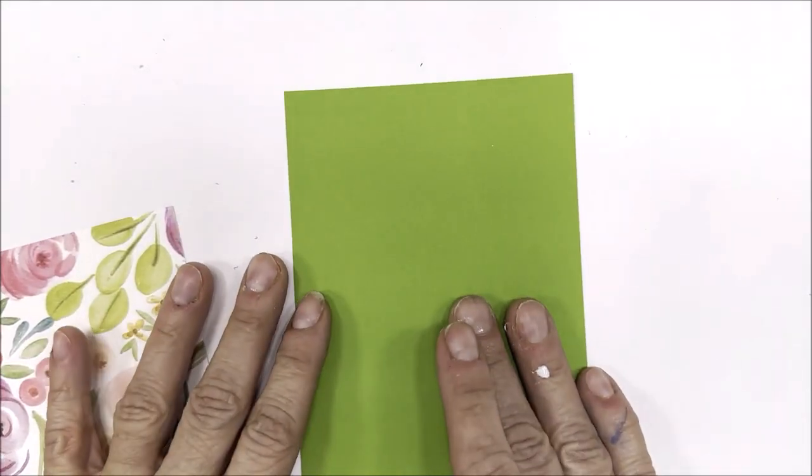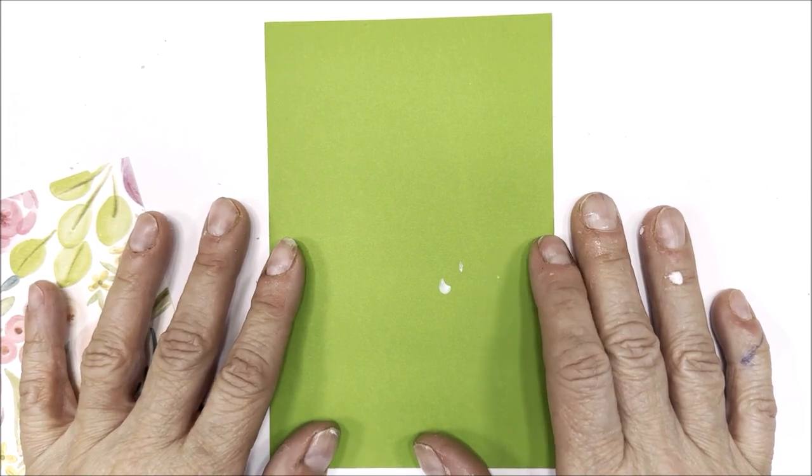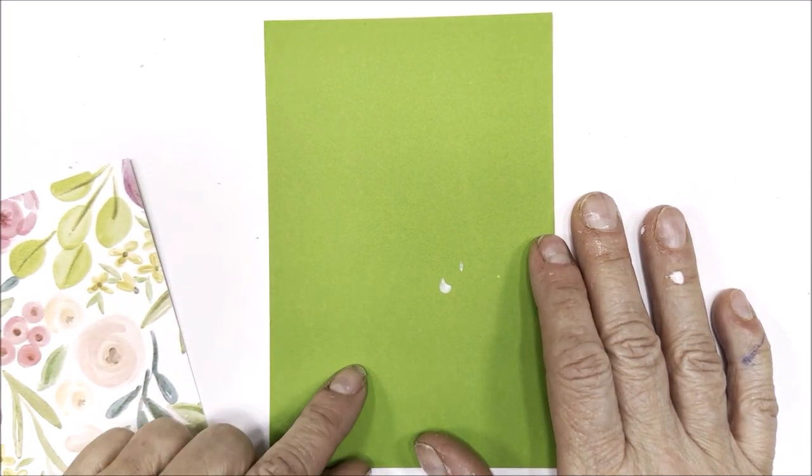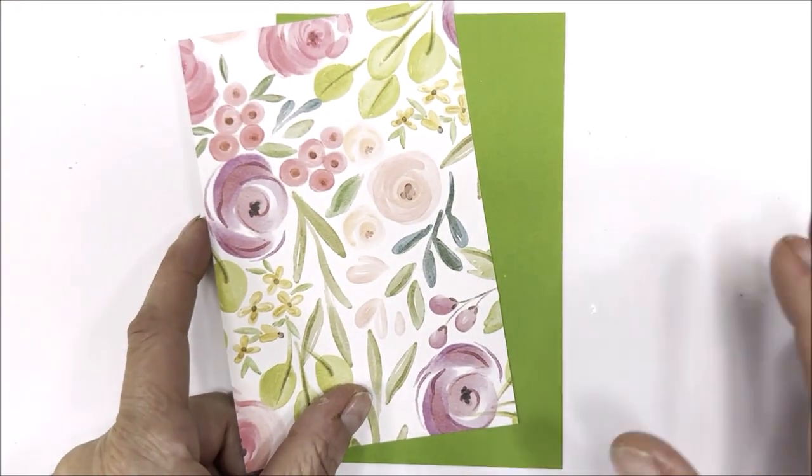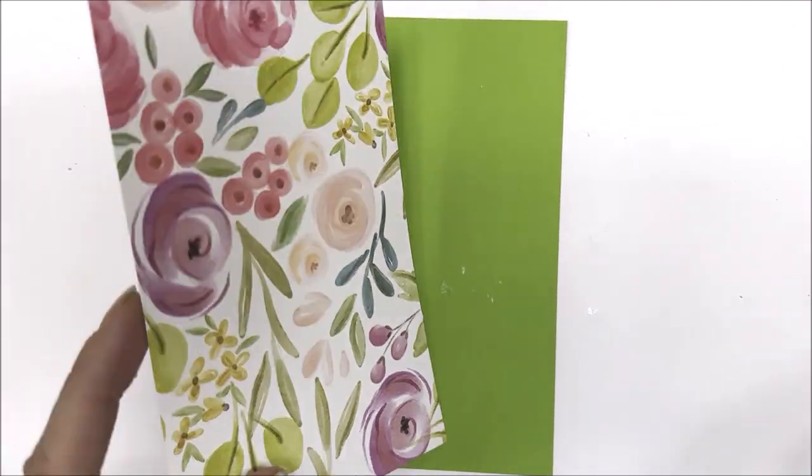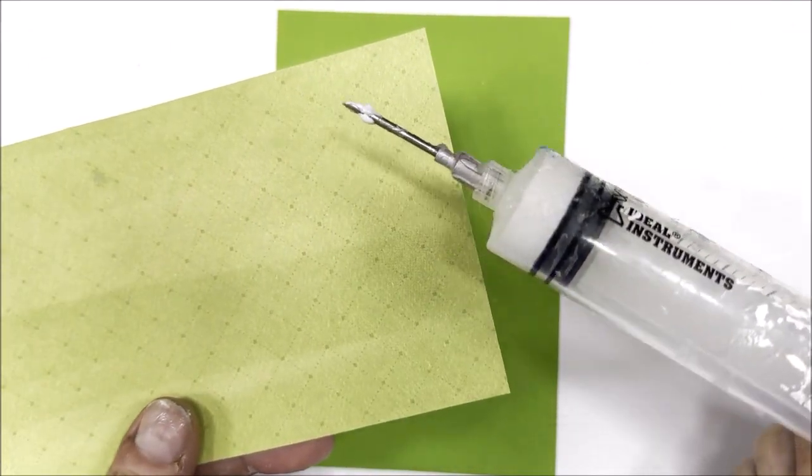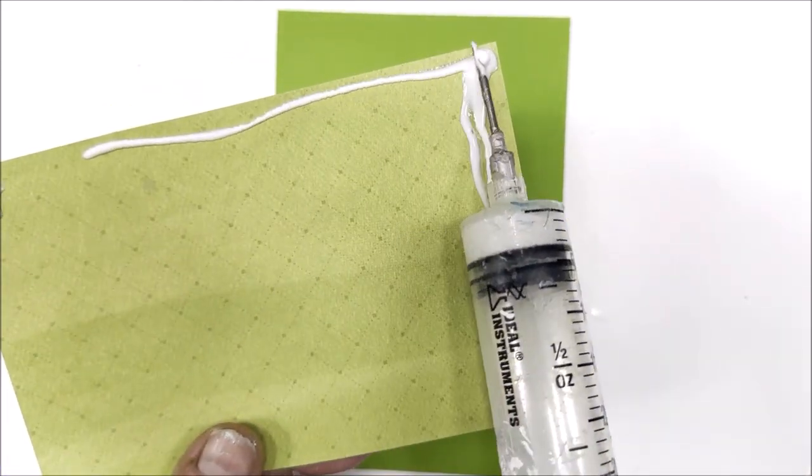The next thing we're going to do is create the backer paper for this project. This piece of cardstock measures four by six inches. The patterned paper measures three and three quarters inches by five and three quarters. We're just going to adhere these together. You can use a tape runner, glue, whatever you like.